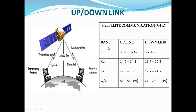We have taken some examples of satellite communication bands: C band, Ku band, Ka band, and WV band. For C band, the uplink frequency is 5.925 to 6.425 GHz and the downlink frequency is 3.7 to 4.2 GHz. Downlink frequency is generally a bit lower than uplink frequency for all types of satellite communications.